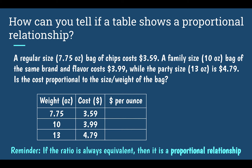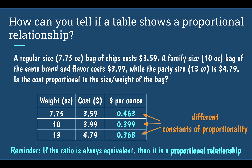Checking the first one: $3.59 divided by 7.75 ounces gives 0.463, about 46 cents per ounce. The next one: $3.99 for 10 ounces comes out to 39.9 cents per ounce, or 0.399. Just based on seeing these two values and the fact that they are not the same, I can tell right away this cannot be proportional. If I check the last one, it's 0.368 — again, not the same constant of proportionality. This is not showing a proportional relationship. They have different constants of proportionality; it is not proportional.